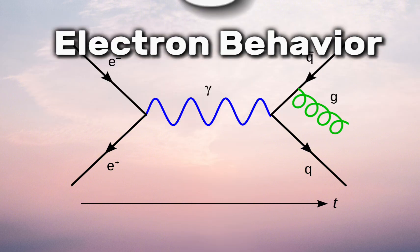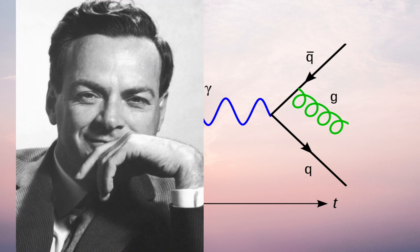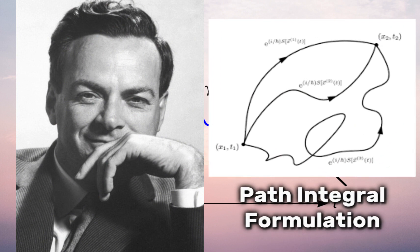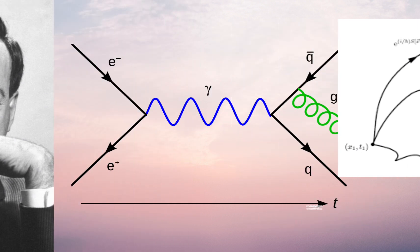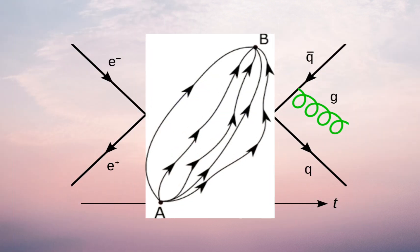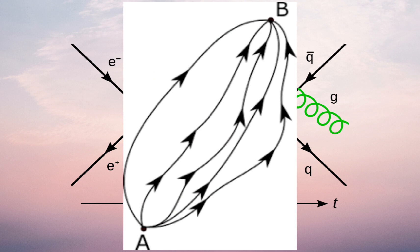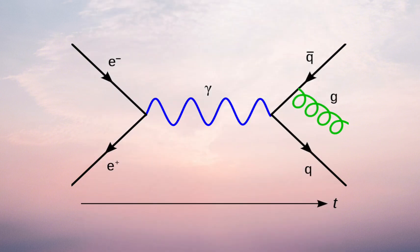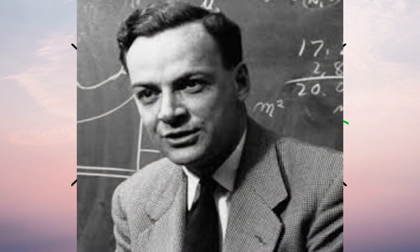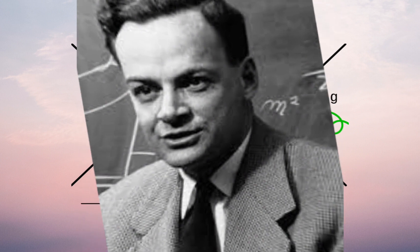3. Quantum Behavior of Electrons. Feynman made significant contributions to our understanding of the quantum behavior of electrons through his development of the path integral formulation of quantum mechanics. He introduced a novel way to describe the probabilistic nature of particle motion in quantum systems. Instead of relying on traditional wave functions or matrix mechanics, he proposed a path integral approach, which considers all possible trajectories a particle could take to get from one point to another. This innovative concept provided a more intuitive and visually accessible way to analyze quantum phenomena, revolutionizing the field of quantum mechanics.